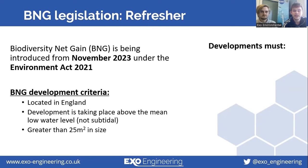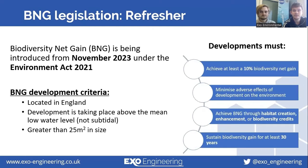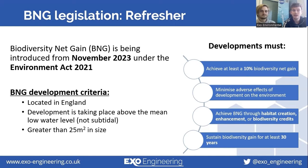The biodiversity net gain objectives can be achieved by providing at least a 10% biodiversity net gain as part of development projects. This can be achieved through habitat creation, enhancement, or through the purchase of biodiversity credits, and it must be sustained for at least 30 years.